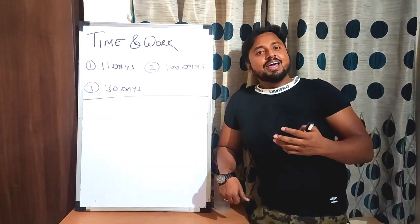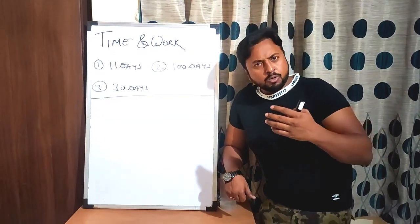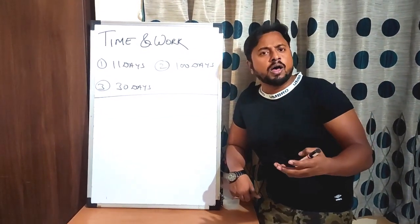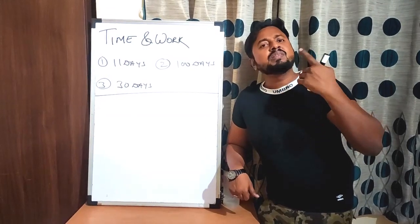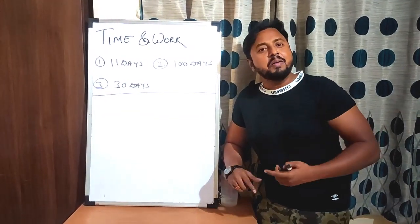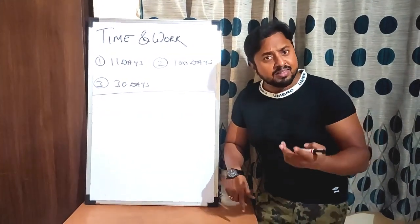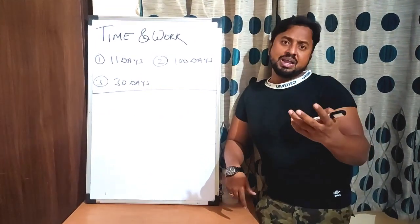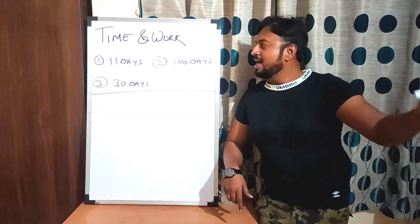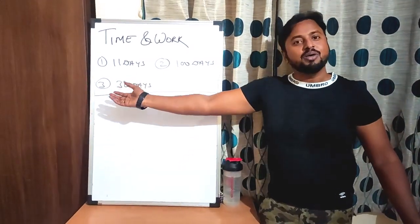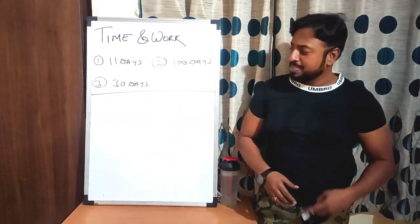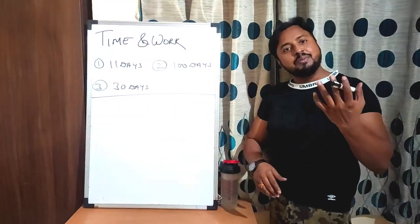Remember the formula MDH — Men, Days, Hours. If you remember MDH, you can solve this entire topic. I will tell you how. The formula is: M1 × D1 × H1 divided by W1 equals M2 × D2 × H2 divided by W2.